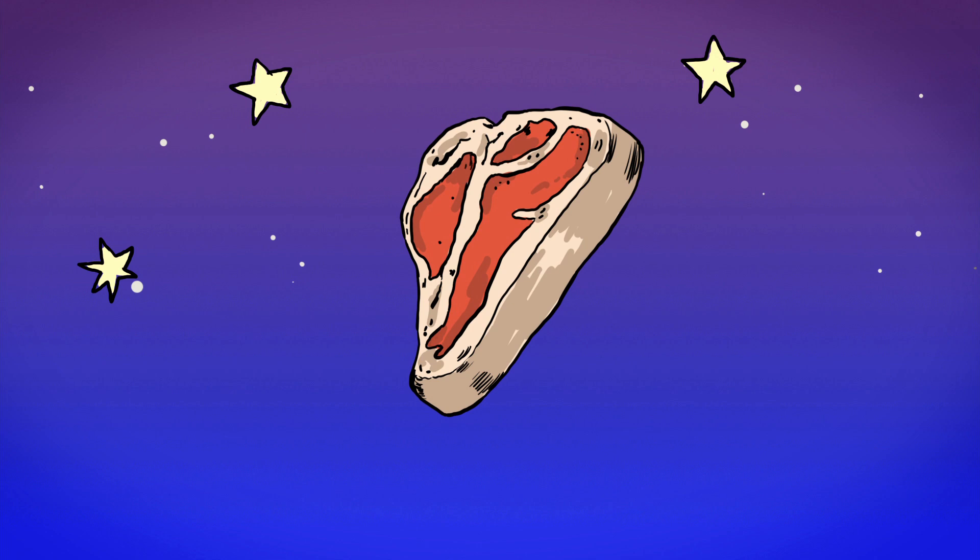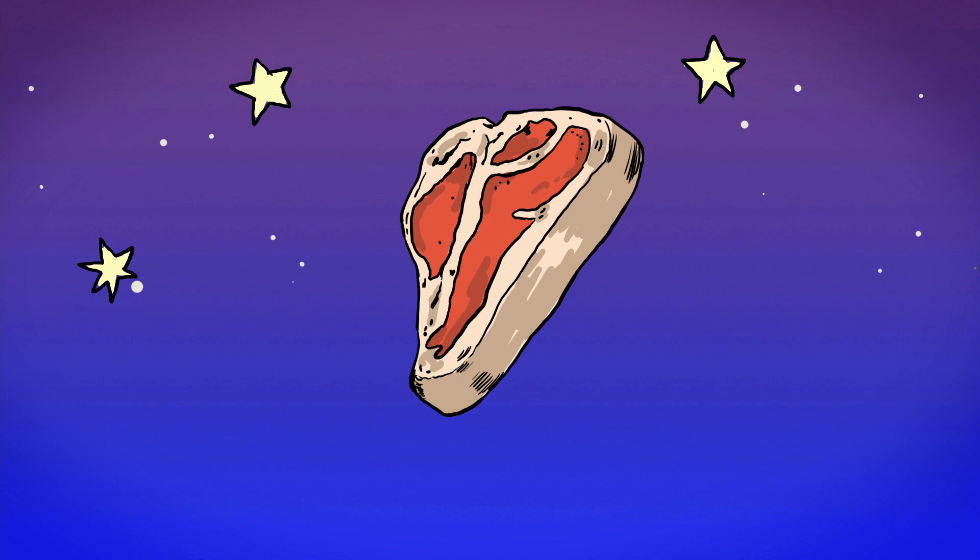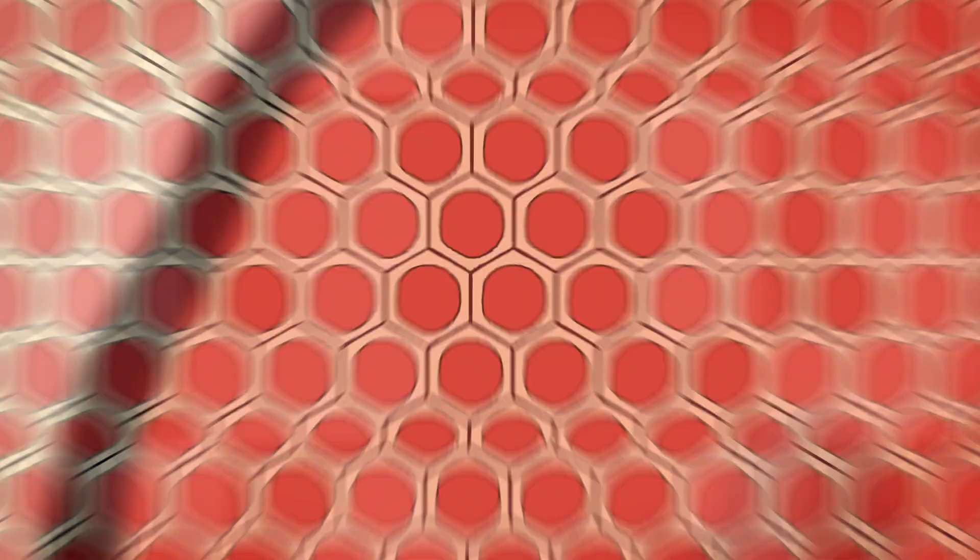You start with a piece of meat. It's got a particular structure, particular moisture content, which is going to get cooked out of it. What happens when you immerse the meat in brine is that salt ions, sodium and chloride ions, move from the brine into the meat.